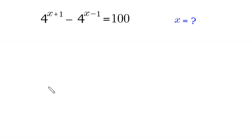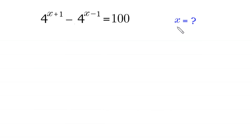Hello, welcome to how to solve this very nice exponential equation. 4 to the power x plus 1 minus 4 to the power x minus 1 is equal to 100. We need to find all possible values of x.